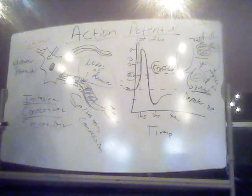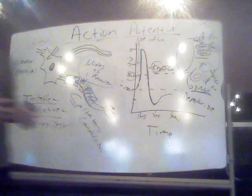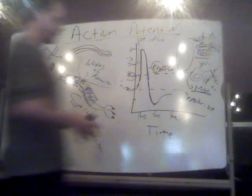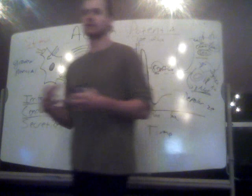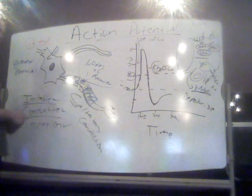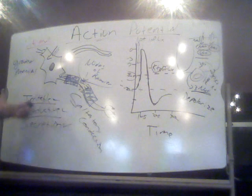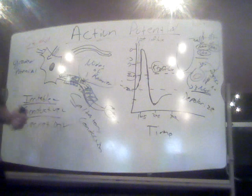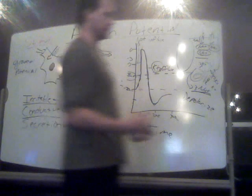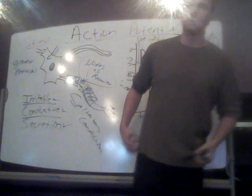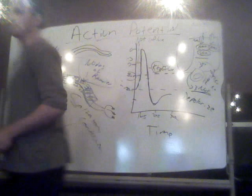Another big factor that plays into this is the diameter of the axon. The bigger the axon, the faster the conduction velocity as well. So keep that in mind — big myelinated axons send action potentials at very rapid rates, like big motor neurons going out to skeletal muscle.